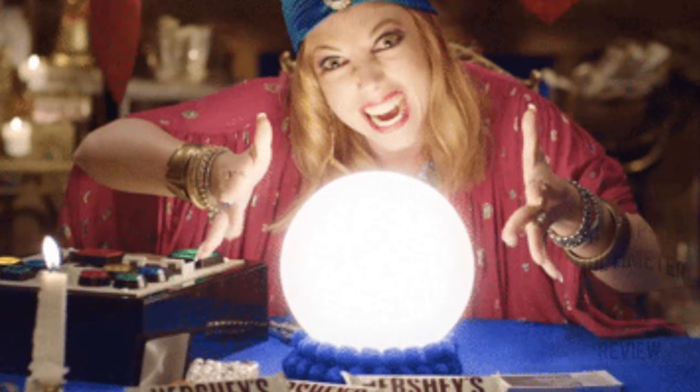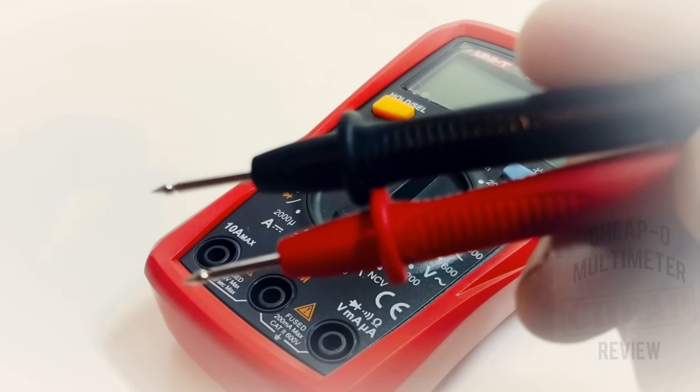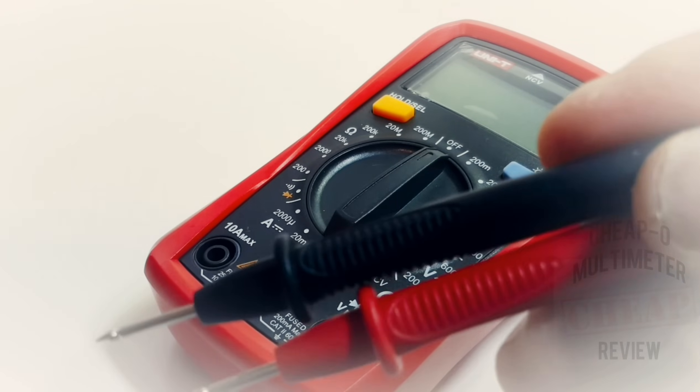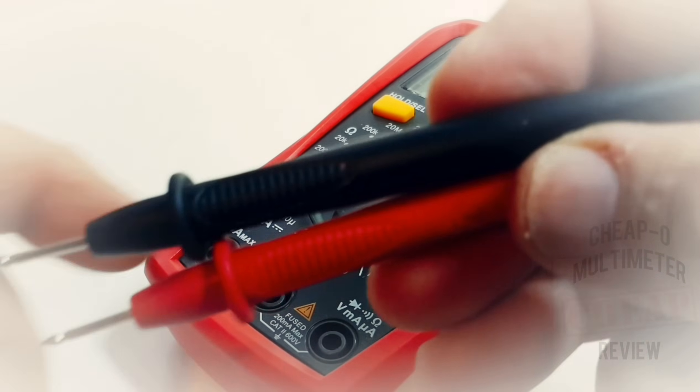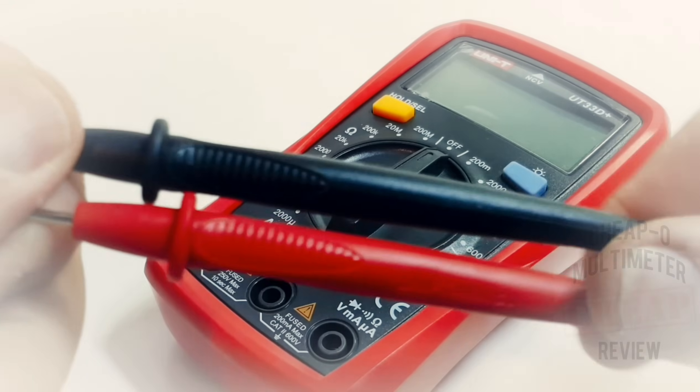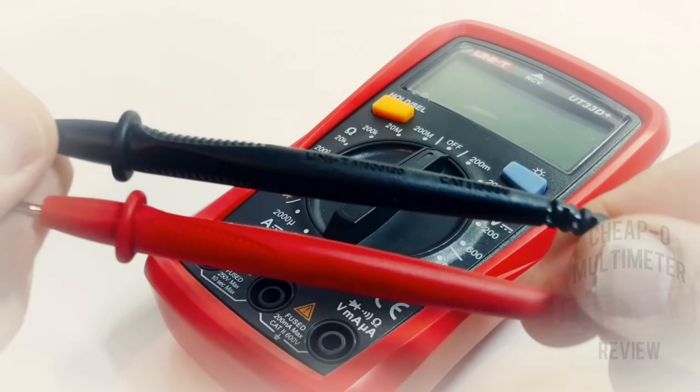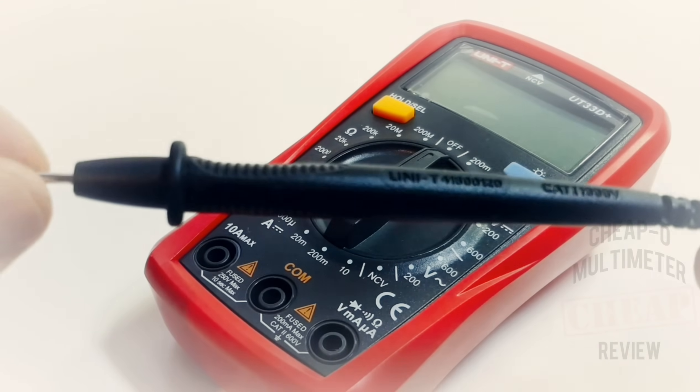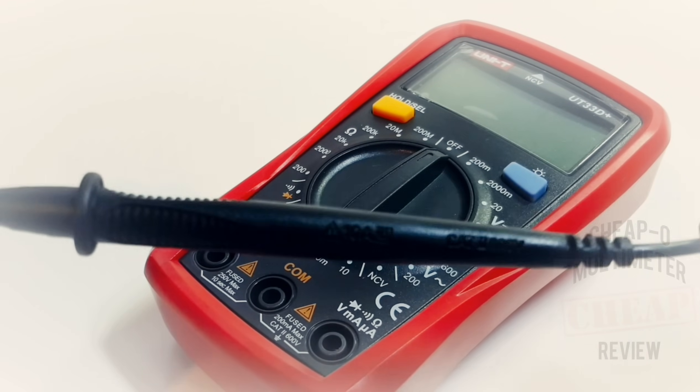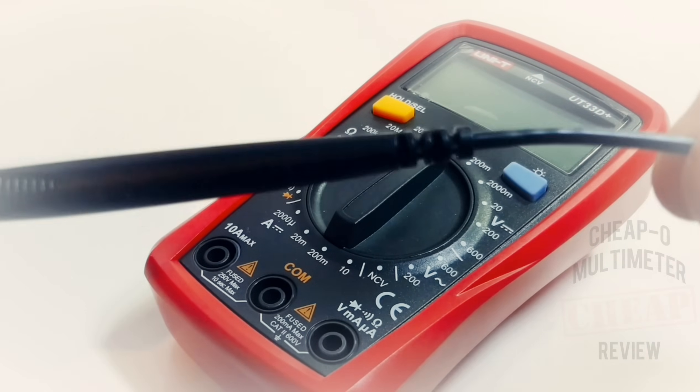UNI-T ships the UT33D+ with a pretty decent set of leads. For me, these have a definite Fluke feel and quality about them, which is rather unusual. I'm liking it though. Definitely not your standard cheapo fare in terms of test leads. Really nice, good gauge wire.